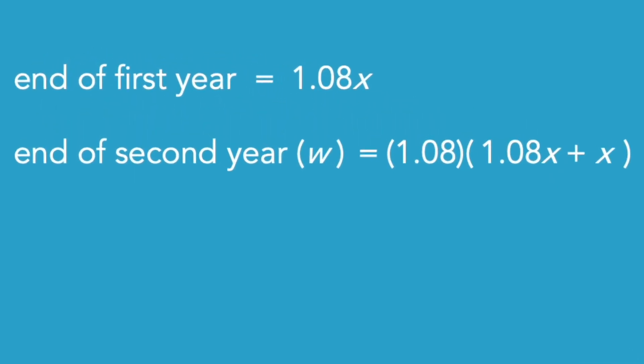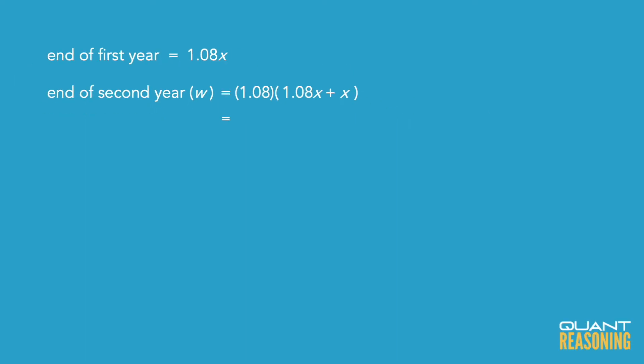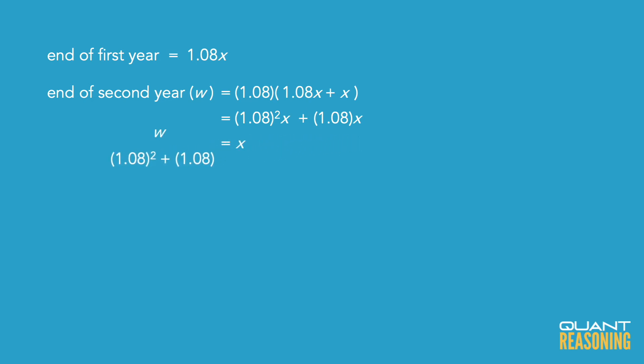Algebraically, we end up with 1.08 times parentheses (1.08x plus x). Distributing the 1.08, you end up with 1.08 squared times x, plus 1.08x. And if you divide w by all of that, you'll get the right answer.